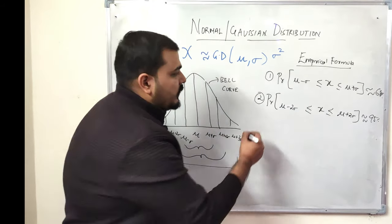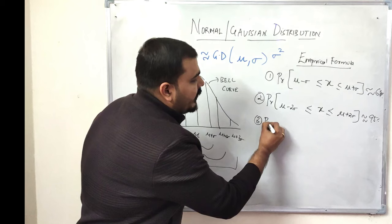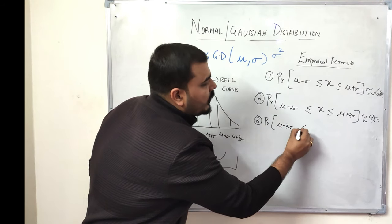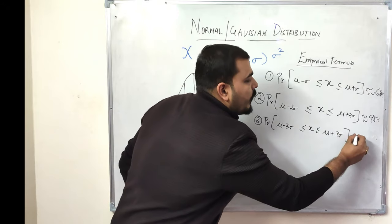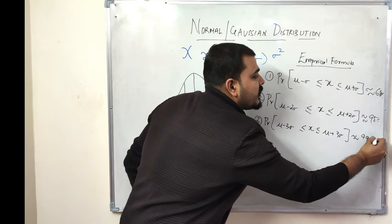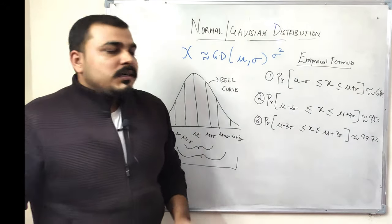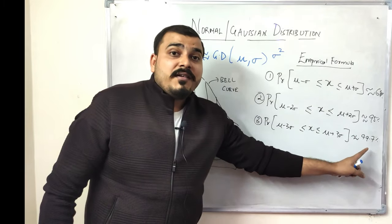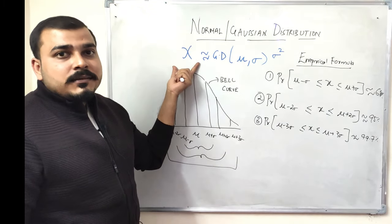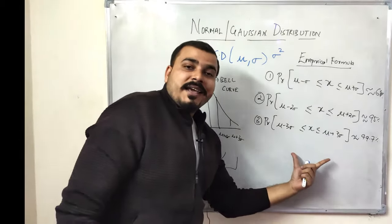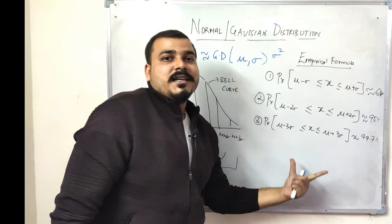The third point says that probability of mu minus 3 sigma less than or equal to X less than or equal to mu plus 3 sigma will be approximately equal to 99.7 percent. This specifies that 99.7 percent of data points belonging to the random variable X lies within the range of three standard deviations.